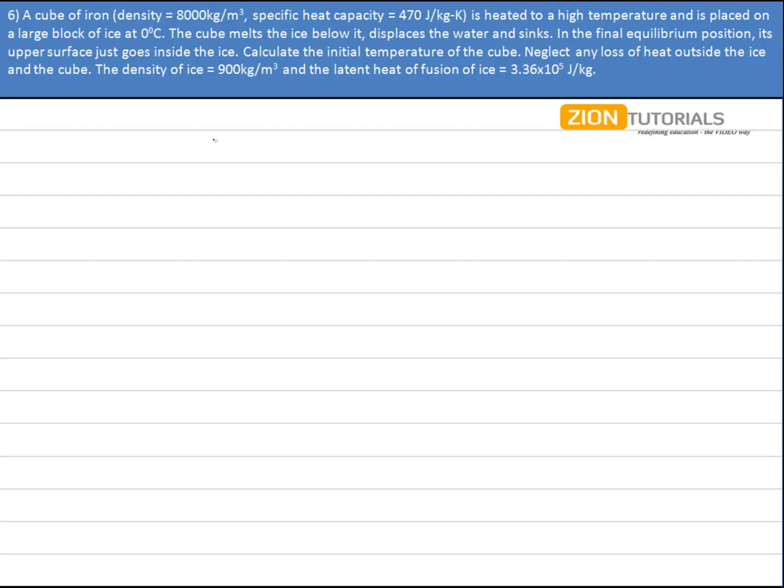Now first of all let the volume of the cube be V. So mass of cube will be density into volume, so density of iron into its volume. This is the mass.